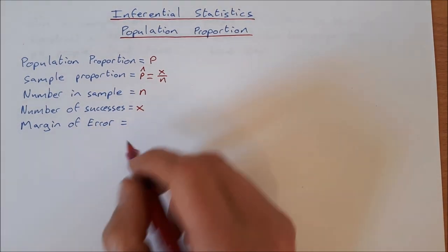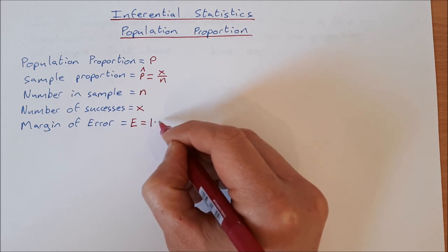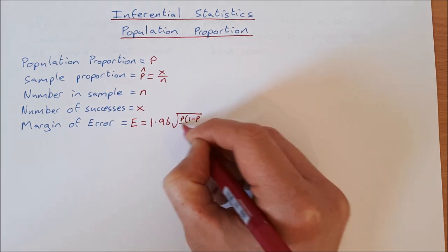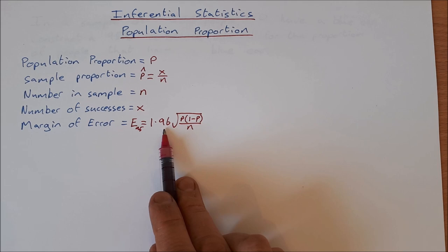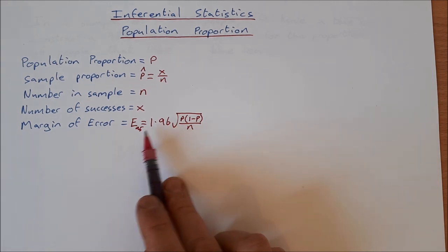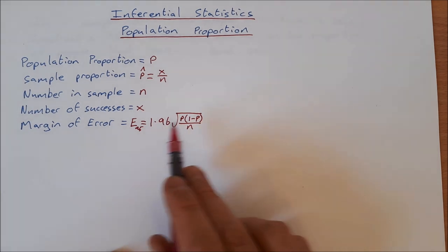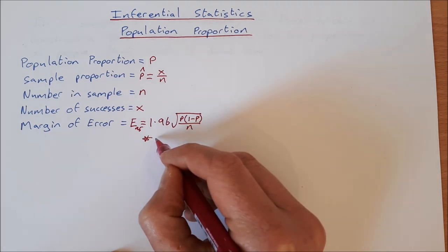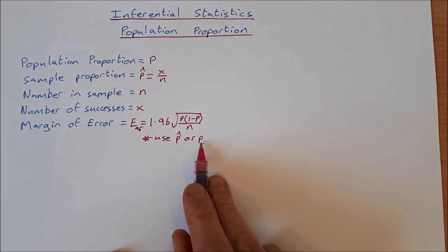The margin of error is e, and for a 95% confidence interval it equals 1.96 times the square root of p times (1 minus p) over n. The 1.96 changes for 90% or 99% — they'll give you that number in the exam, so you only need to remember 1.96. Here p is the population proportion, but if you don't know it you can use p-hat instead.